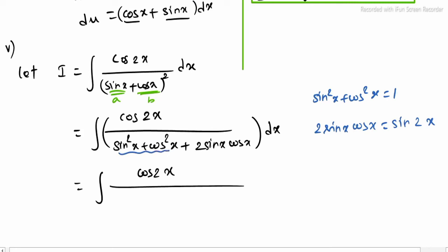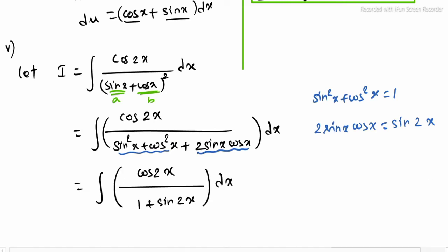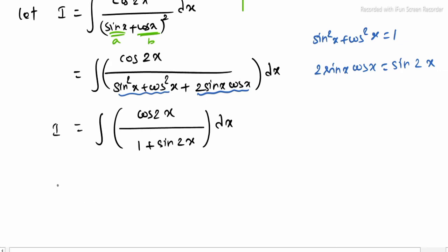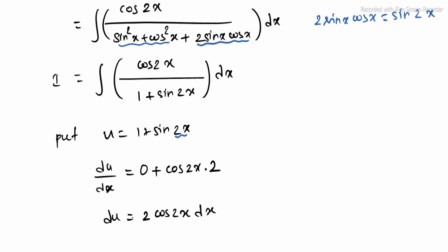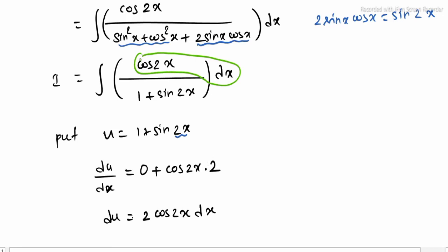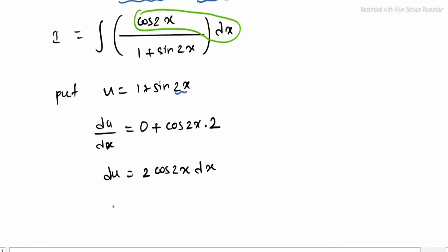Now apply denominator substitution. Put u equal to 1 + sin 2x. Differentiating: du/dx equals 0 + cos 2x · 2 (by chain rule), so du equals 2 cos 2x dx. Therefore cos 2x dx equals du/2. Observing the numerator, cos 2x dx can be replaced by du/2.